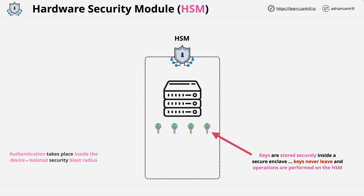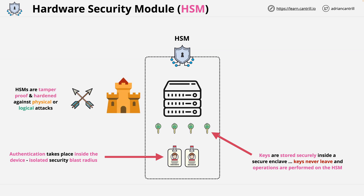By utilizing HSMs, you create a secure island within your infrastructure where all cryptographic operations are controlled from. Authentication takes place inside the device, meaning you have an isolated security blast radius. Even if your corporate identity store was exploited, the identities used within a HSM are internally defined and so can withstand this type of exploit. HSMs are tamper-proof and hardened against physical and logical attacks. The devices use secure enclaves internally, which makes it almost impossible to gain access to the internal key material through direct physical means. Many smartphones today come with a similar cut-down version of this — it stores your biometric information to keep it isolated from any badly behaving software on your smartphone.